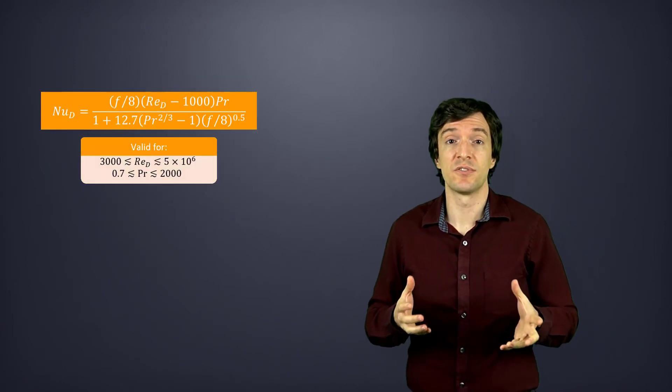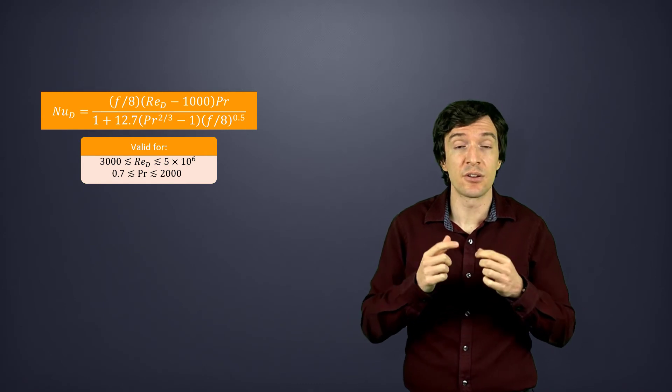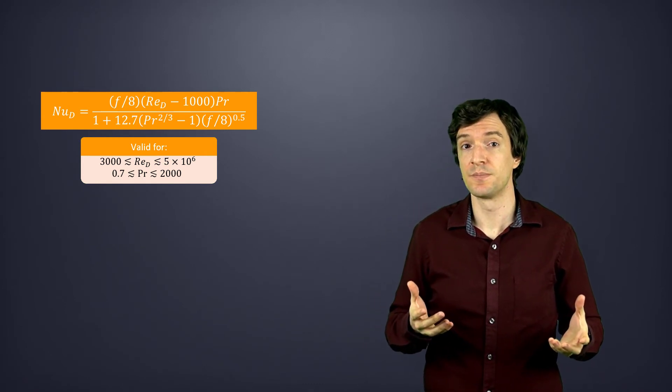Lastly, this correlation can be used for a large range of Reynolds numbers, including transitional flows. In general, for turbulent flow, it is common to assume that the Nusselt number in the entrance region is equal to the one in the fully developed region, since the entrance length is relatively short. But in the case of short tubes, it is better to use appropriate correlations instead.